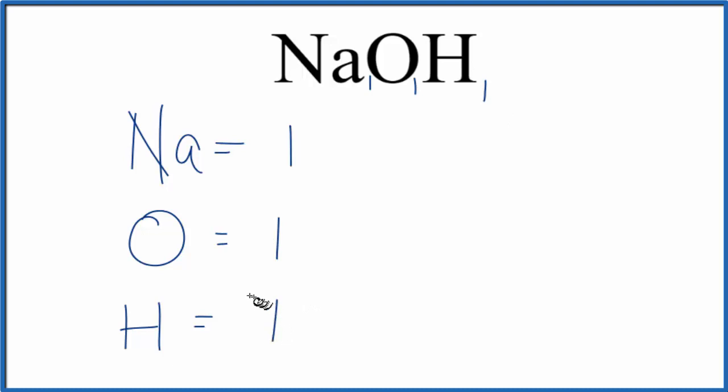If you were asked how many atoms of sodium there were in one mole of sodium hydroxide, you would just multiply this by Avogadro's number. So 1 times 6.02 times 10 to the 23rd, that would give you 6.02 times 10 to the 23rd sodium atoms in one mole of sodium hydroxide.